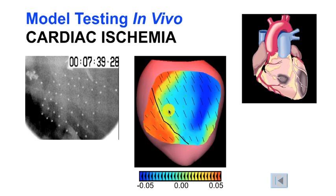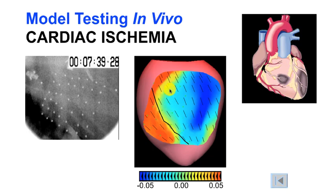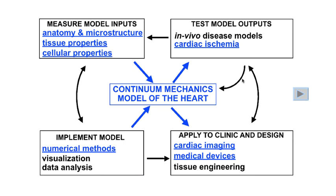Interestingly, even outside the boundary of the ischemic area where blood flow is normal, the mechanics remain abnormal for some distance — strains are still positive or zero. This shows a mechanical interaction between the positive strains in the stretching ischemic region and the negative strains in the shortening non-ischemic region. This suggests that using abnormalities of wall motion to estimate the size of the ischemic area may actually overestimate the area of reduced blood flow, but also shows that reduced blood flow to one area can impact mechanical function of a larger region.